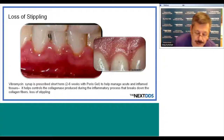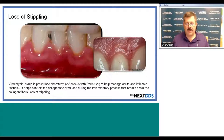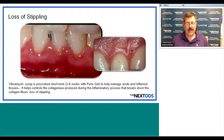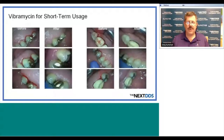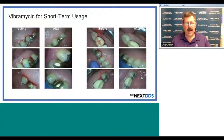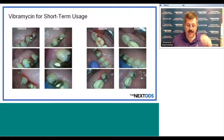One thing to point out to patients: when using the vibromycin syrup, which is only used for about two to six weeks, they will see loss of stippling on the gingiva, which will come back once they stop using it. This is due to its effect on collagenase produced during the inflammatory process. Looking at before and after examples in the before column, we see bleeding; in the after column using the combination of vibromycin and peroxide gel in the tray, the bleeding has disappeared.